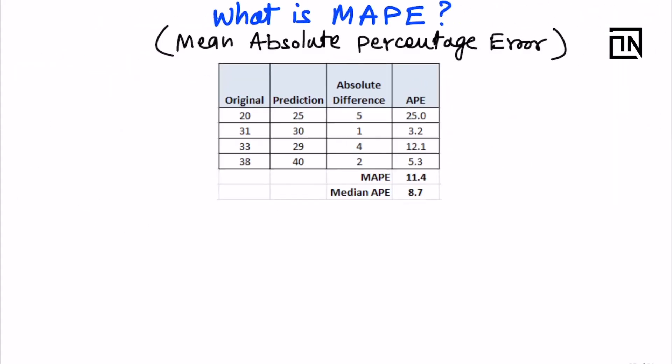So what is MAPE? It is the short form of mean absolute percentage error, and as the name suggests it tries to measure some error — the error between the original values and the prediction values. This situation arises when you are predicting numbers, which you do using a regression model.